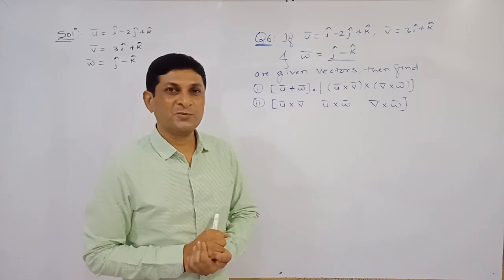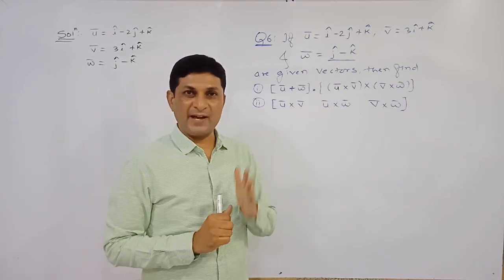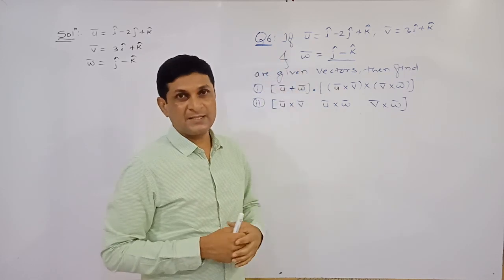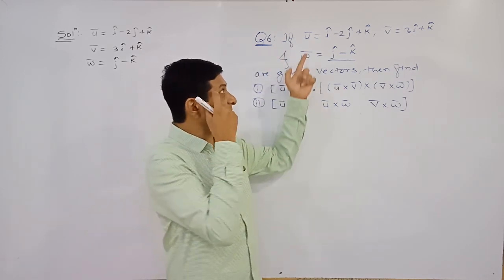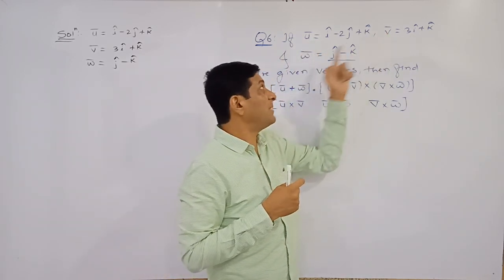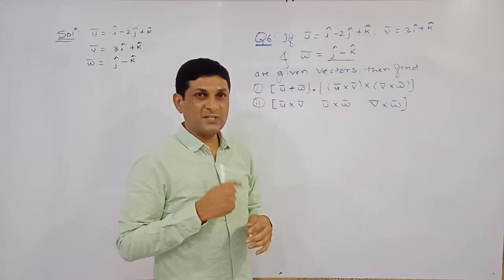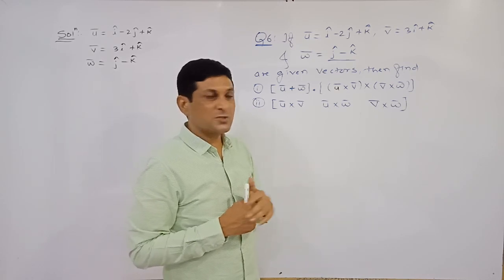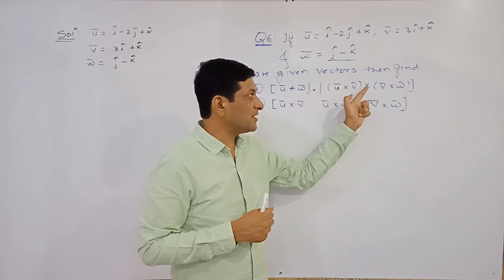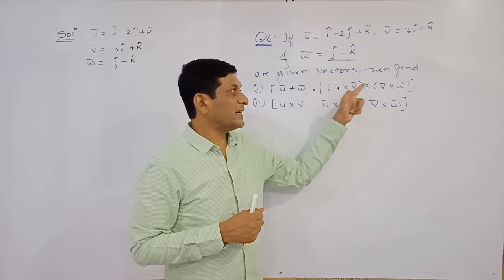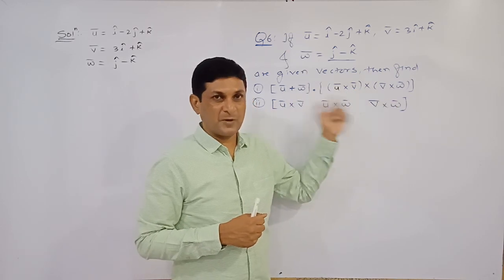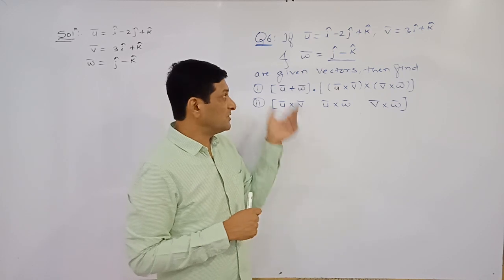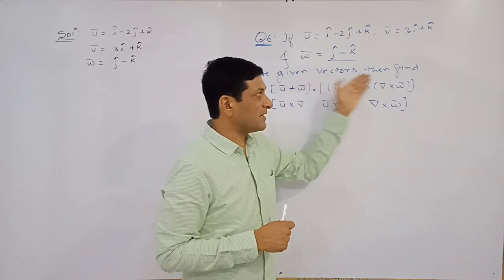Hello friends. In the last two videos we solved the first five examples from this exercise. Now we are solving question number six. Three vectors u̅, v̅, and w̅ are given to us. We have to find out two values — one involves a dot and a cross, which means it is a scalar triple product of these three vectors.